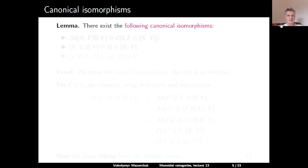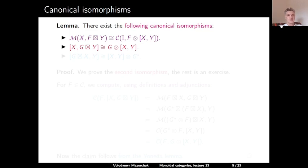Let us now discuss some canonical isomorphisms. Lemma: there exist the following canonical isomorphisms. First, an isomorphism from the morphism set in M from X to F acting on Y, to the morphism set in C from the identity to F ⊗ [X, Y]. Second, the internal hom [X, G·Y] is isomorphic to G ⊗ [X, Y]. And finally, the internal hom [G·X, Y] is isomorphic to [X, Y] ⊗ G^∨.